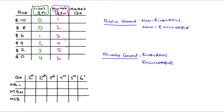Just to show you how to interpret the table: if the price of the good was $10, then Lisa doesn't demand anything, Murthal demands one unit. At a price of $8, Lisa demands still nothing, but Murthal demands two units, and so on. We can interpret the whole table in that fashion.